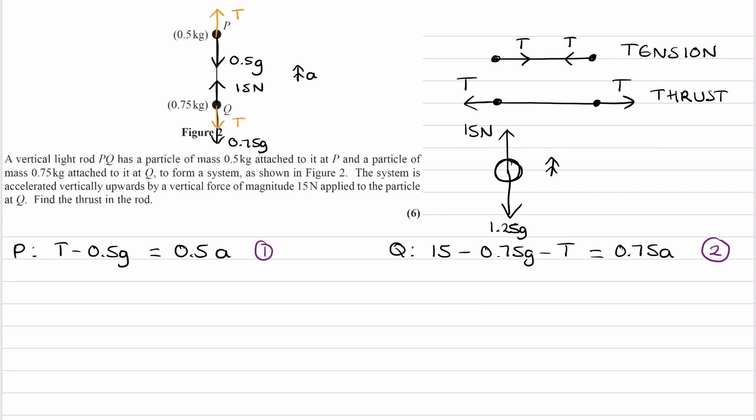Again, the acceleration is upward, A. We can break down that scenario. I'll say S for the whole system. Upward force is 50, minus the downward force of 1.25g. That equals MA, so 1.25A. That's equation 3.